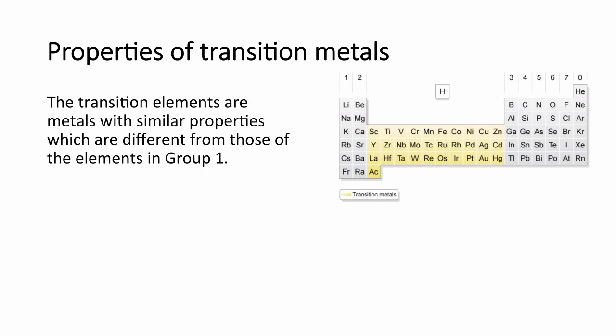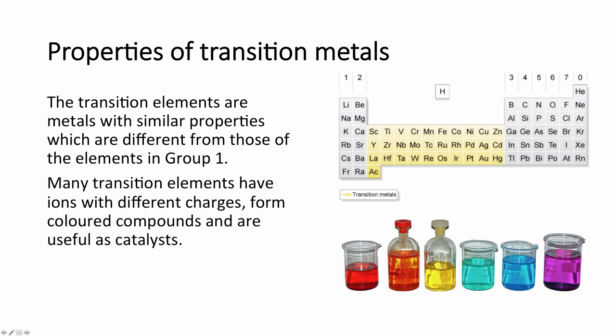Transition metals are metals with similar properties, which are different from those of group 1. They can be found between group 2 and group 3 of the periodic table — these are the more typical metals familiar to us: iron, silver, gold, platinum, copper. Transition metals can form many different ions, unlike group 1 which only forms positive 1 ions — for example, copper can form +1 or +2, and iron can form +2 or +3. This makes them useful as catalysts and means they can form many different coloured complexes.